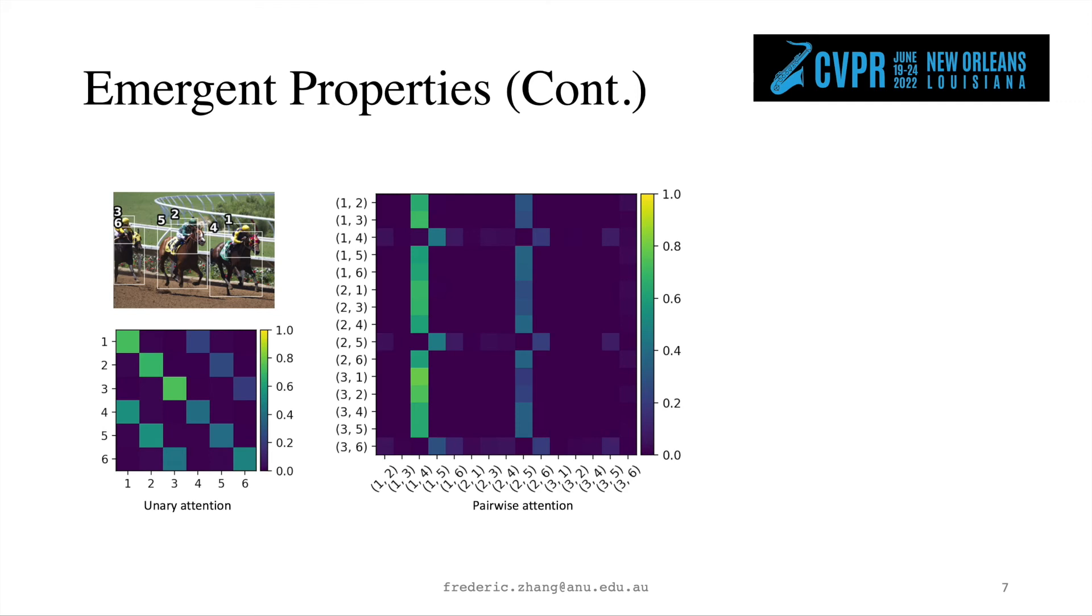To understand the complementary behaviours on an image level, we visualised the attention weight in both types of layers. We found that in the unary layer, humans and objects that form interactive pairs attend to each other. We hypothesised that this form of attention helps increase the scores of positive pairs. To validate, we manually overrode these attention weights to 0, and in turn observed a score decrease in the corresponding pairs, corroborating the hypothesis.